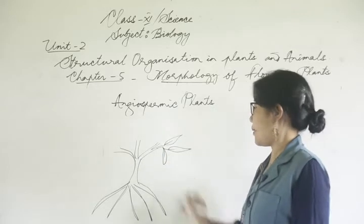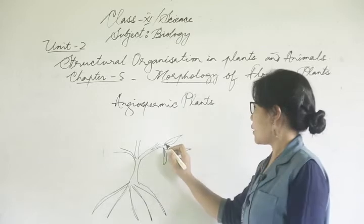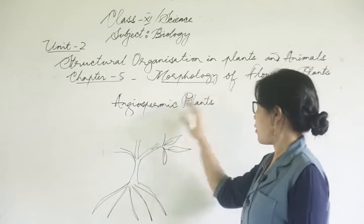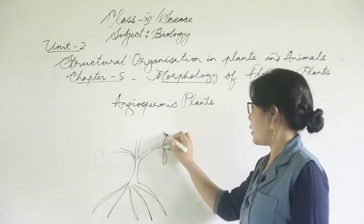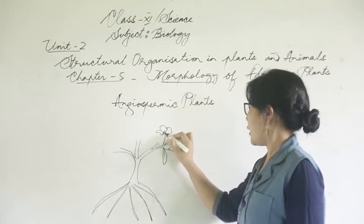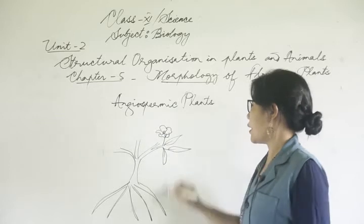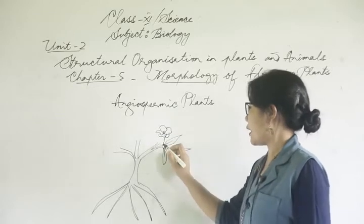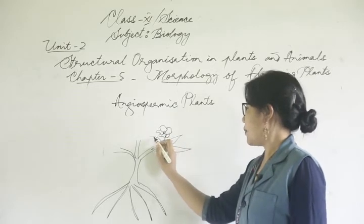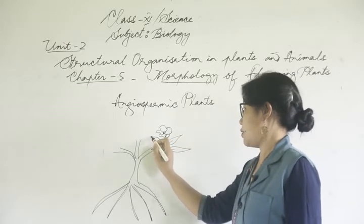If you have a flowering plant, you will find flowers. It may also have fruits and seeds.